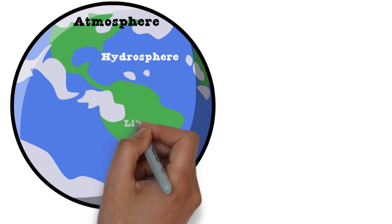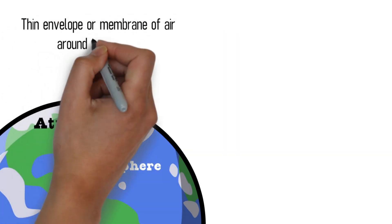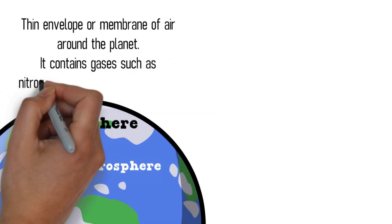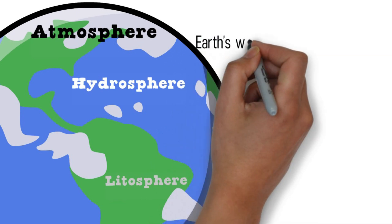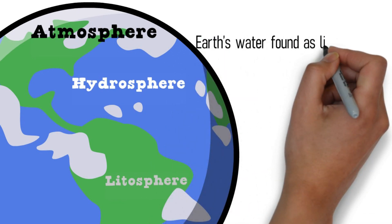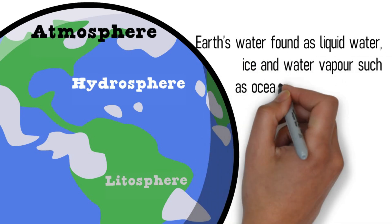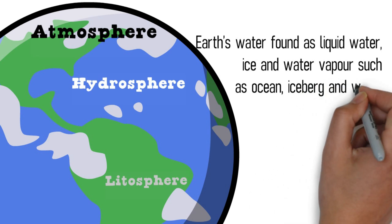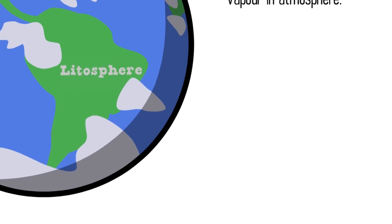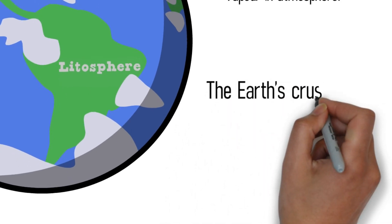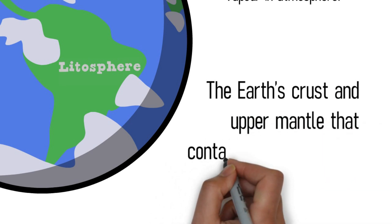The atmosphere is a thin envelope or membrane of air around the planet; it contains gases such as nitrogen, oxygen, and carbon dioxide. The hydrosphere refers to Earth's water, found as liquid water, ice, or water vapor — for example, oceans, icebergs, and water vapor in the atmosphere. The lithosphere is the Earth's crust and upper mantle that contains soil and minerals.